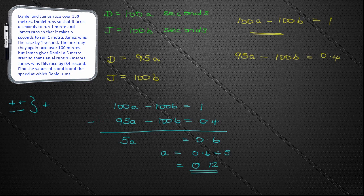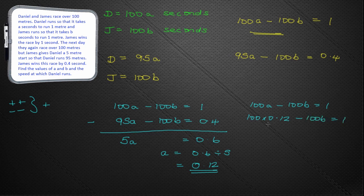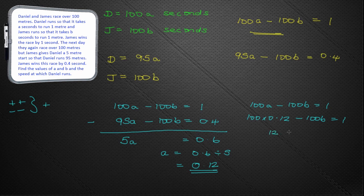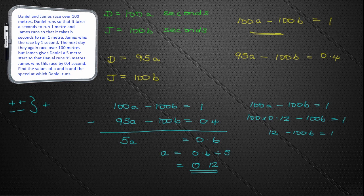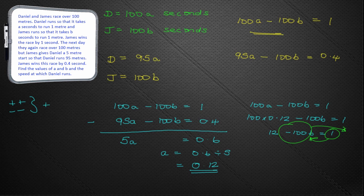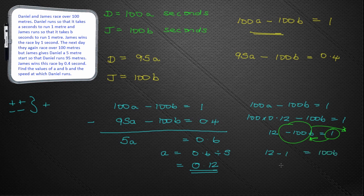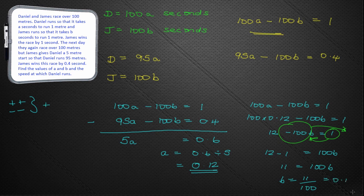How does that help us? Well, I can now go back and work out my value of B by using 100A minus 100B equals 1. 100 times A is 100 times 0.12 minus 100B equals 1. So, 100 times 0.12 is 12 minus 100B equals 1. So, we don't like that at all. So, what we're going to do is move the minus 100B over here to make it positive. So, to get the B on its own. So, that gives us 12 minus 1 is 100B. So, 11 is 100B, or B is 11 divided by 100, or 0.11.